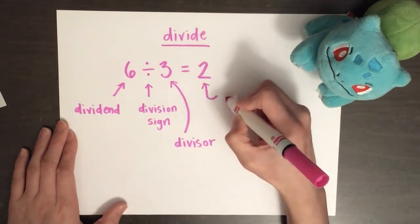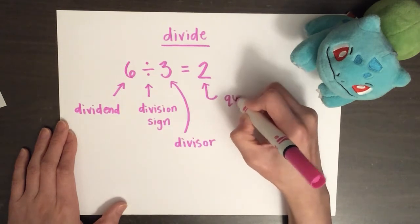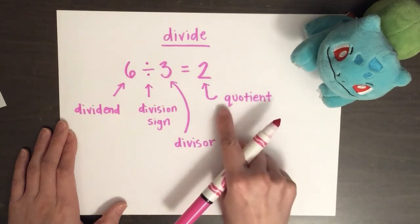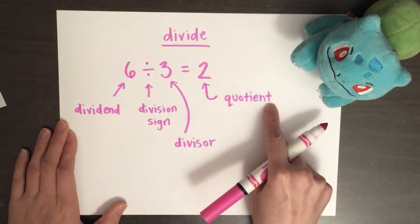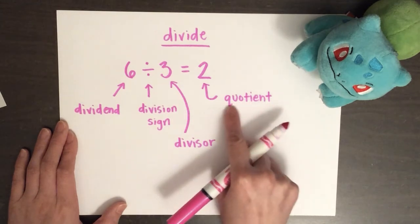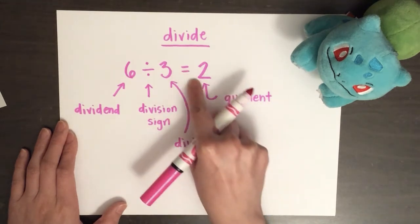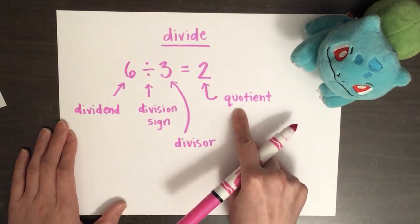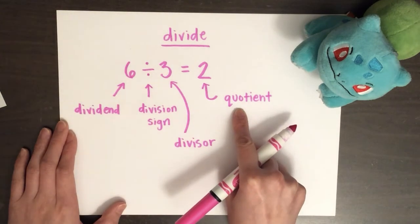This number is called the quotient. Please repeat after me. Quotient. The quotient is the answer to a division problem or the number of items or things in each group.